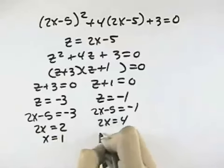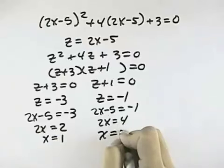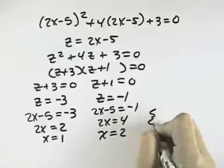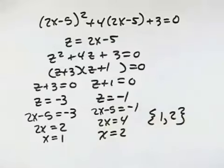Here, I add 5 to both sides to get 2x equals 4. Dividing by 2, I get x equals 2. So my solution set is 1, 2.